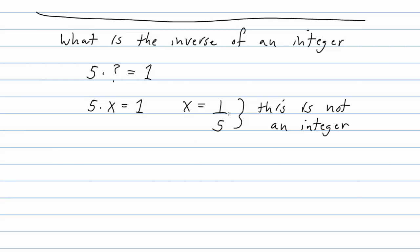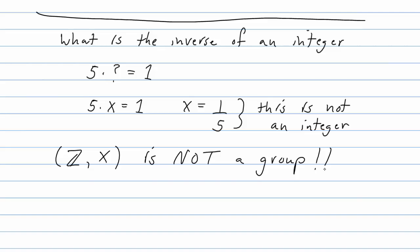So the integers with respect to multiplication is not a group. It looked like it was going to satisfy all the axioms, but when we checked whether every element has an inverse, the answer is no — most elements don't. Five doesn't have an integer inverse, nor do 3, negative 2, 18, or 460,000. Almost every element in the set does not have an inverse. So this is not a group.